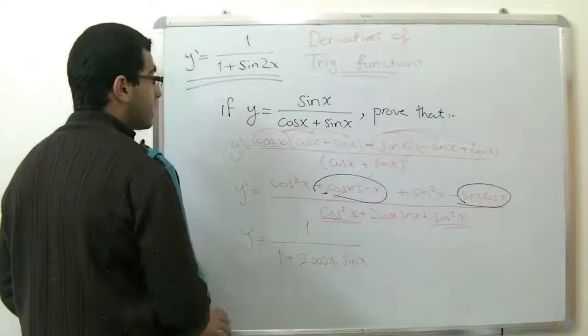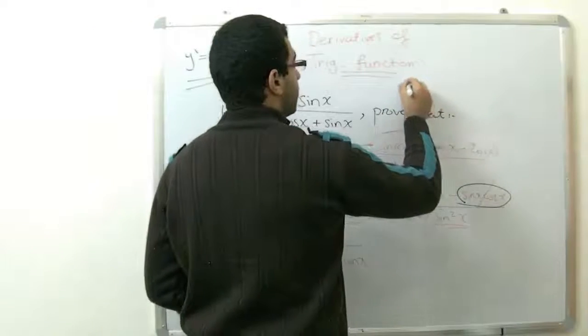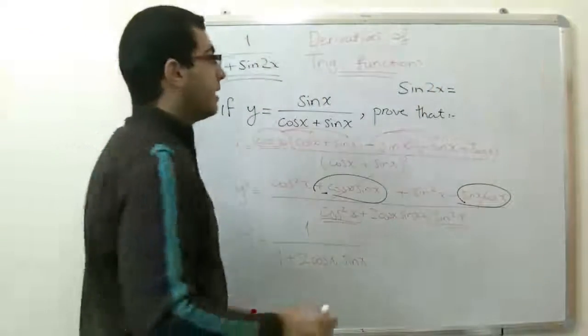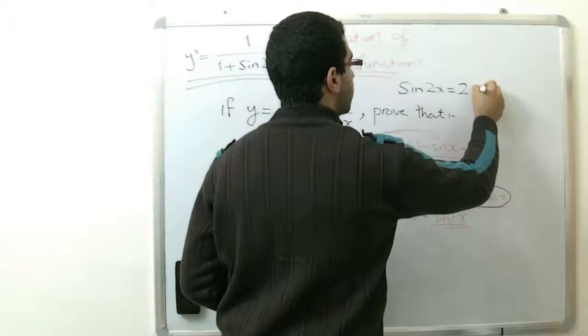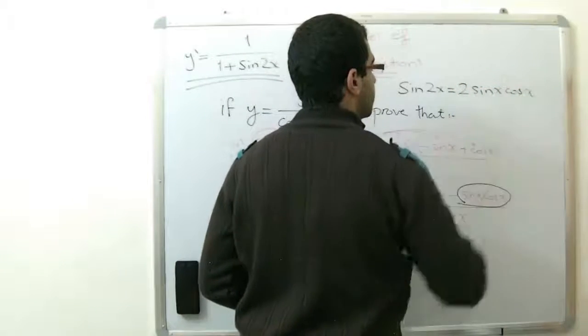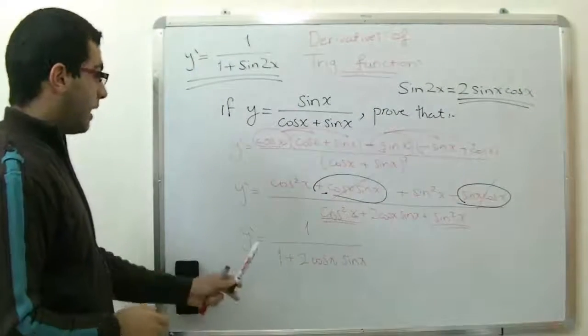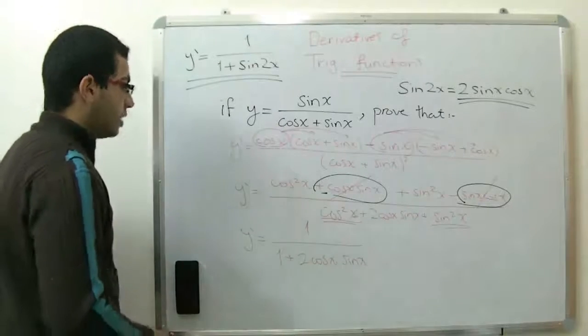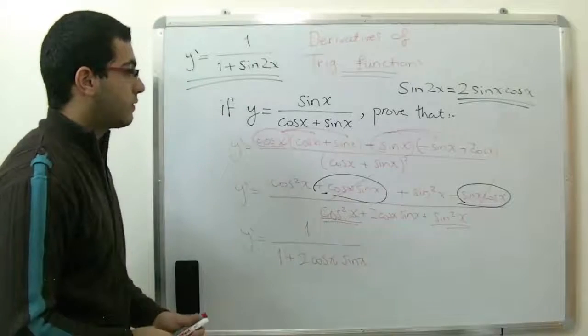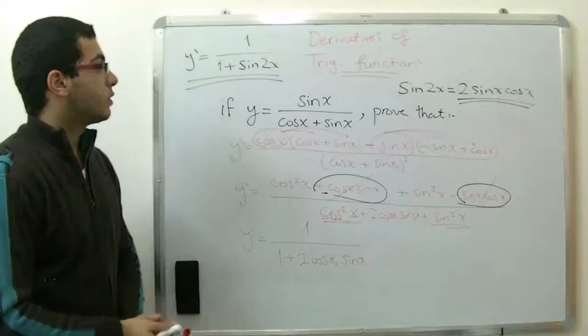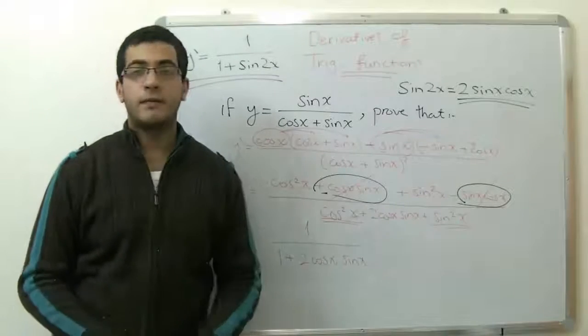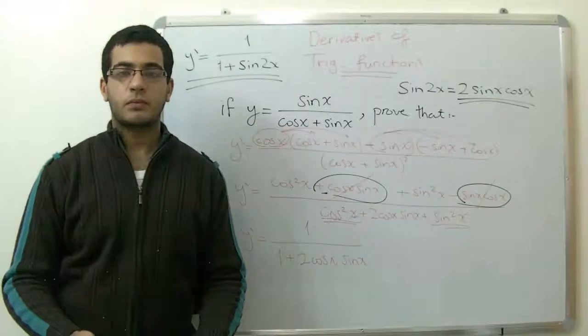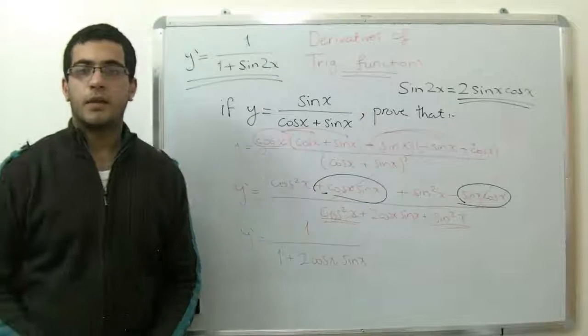Which states that if we have sine 2x and we want to factorize it, we can write it this way: 2 sine x cosine x. And by this, we have simplified our function, our derivative of the function, to the form that we need in our problem. And we have solved the problem, and this is it for today. And this is all for the derivatives. Next time I'll talk about the trigonometric laws in the next video. And until then, I thank you for watching.